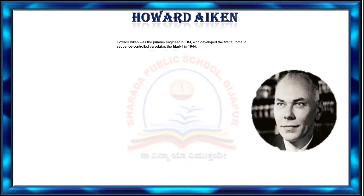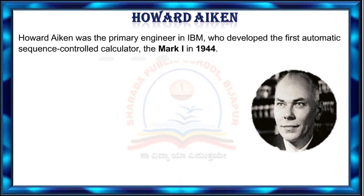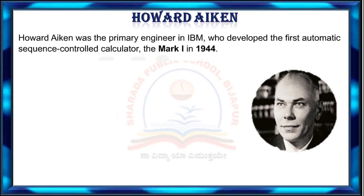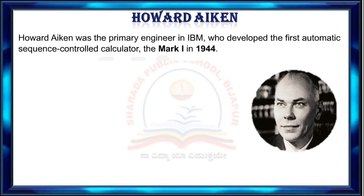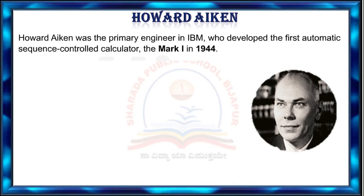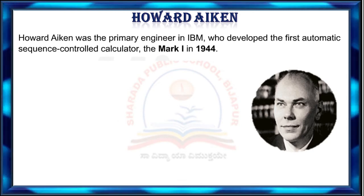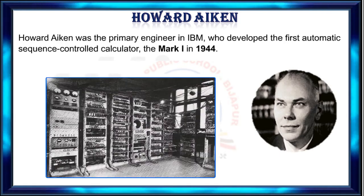Howard Aiken was the primary engineer at IBM who developed the first automatic sequence control calculator, the Mark I, in 1944.